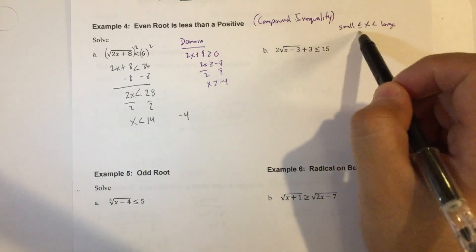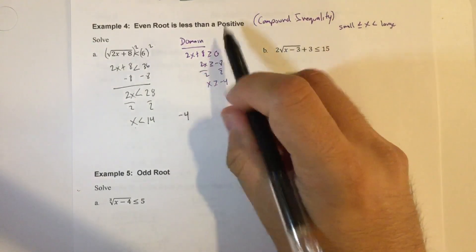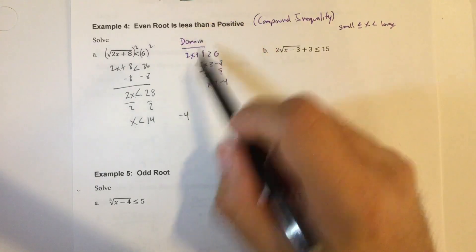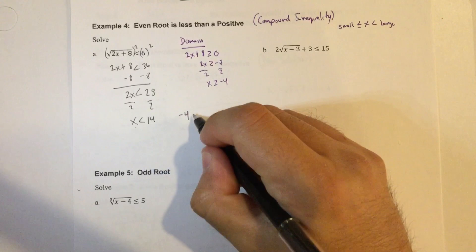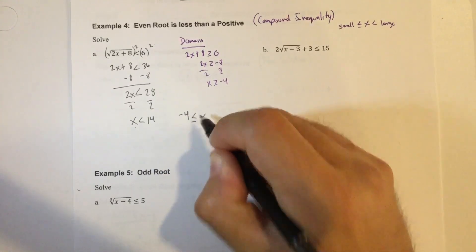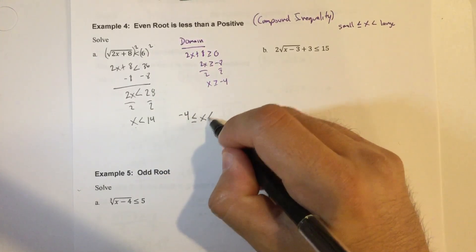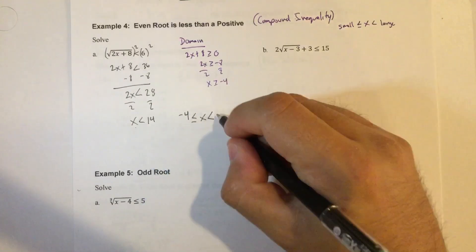So here's our compound inequality. Our small number first is negative 4. Be careful, because this one, regardless of what this sign is, the starting point of the domain is always equal to it, because that's that closed circle. So negative 4 is less than or equal to x, which is less than this number here, which is 14.